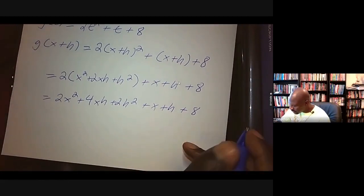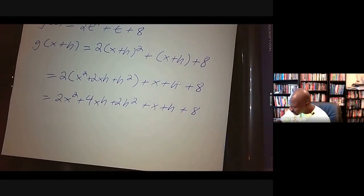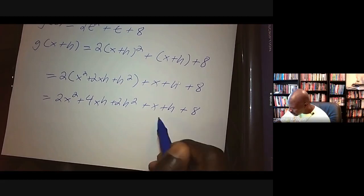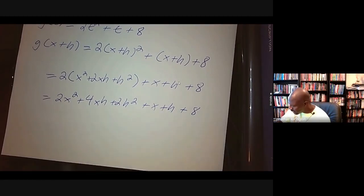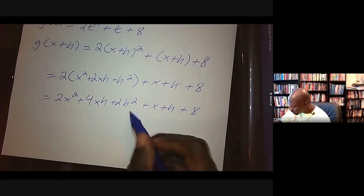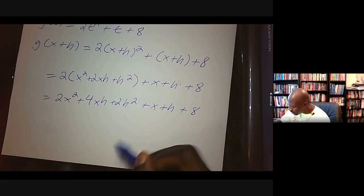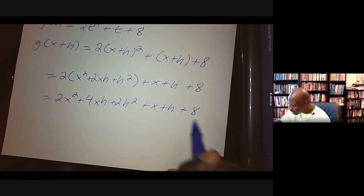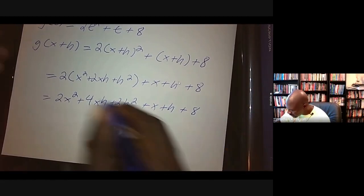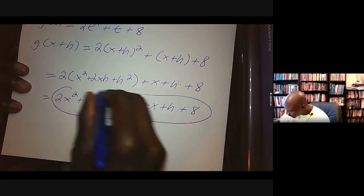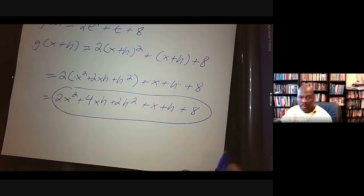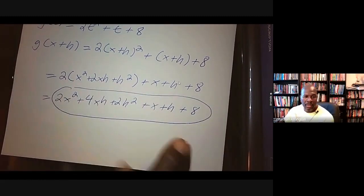From here, we distribute the 2 and then combine like terms. So this is 2x² + 4xh + 2h², plus x + h + 8. Now we'll combine like terms — actually, we don't have any like terms. There's only one x² term, one xh term, one h² term, one x term, one h term, and one constant. So there is our answer.